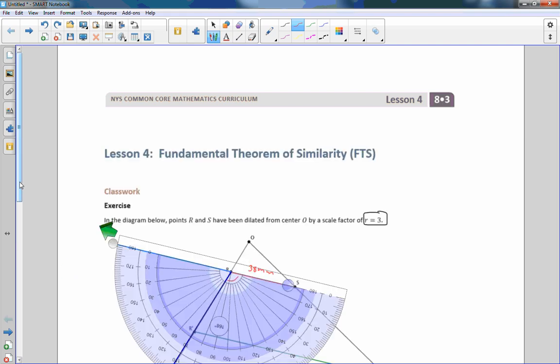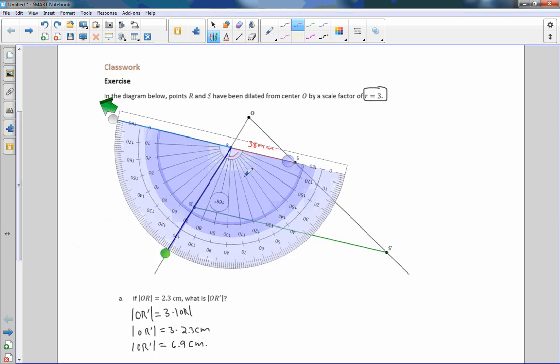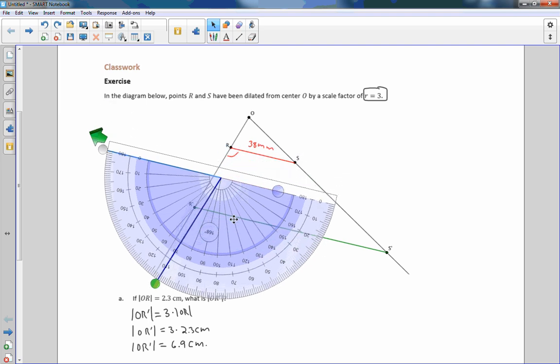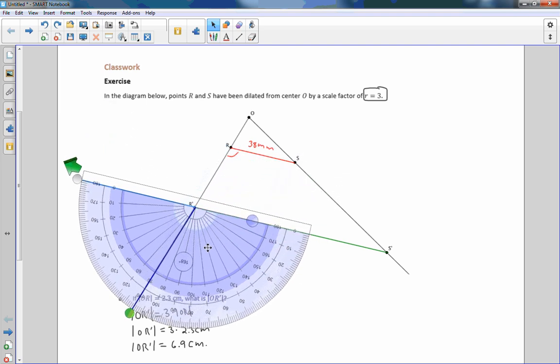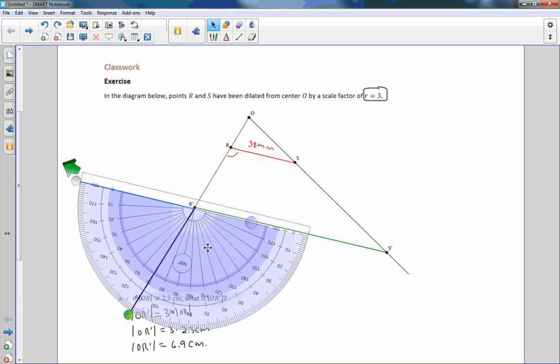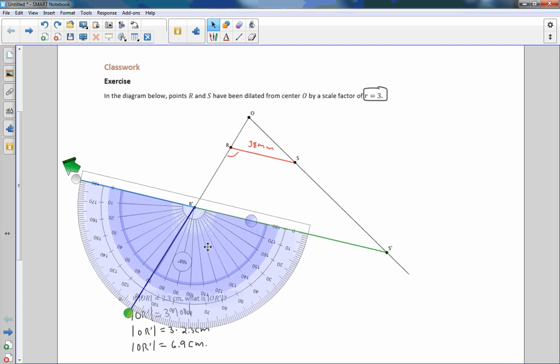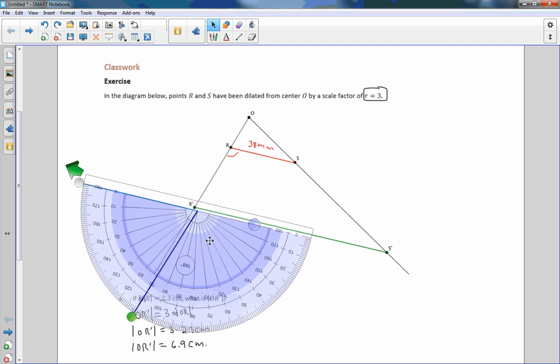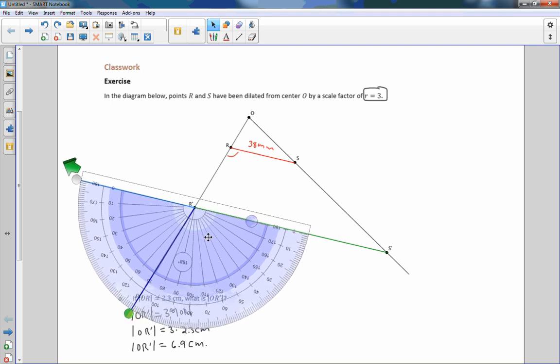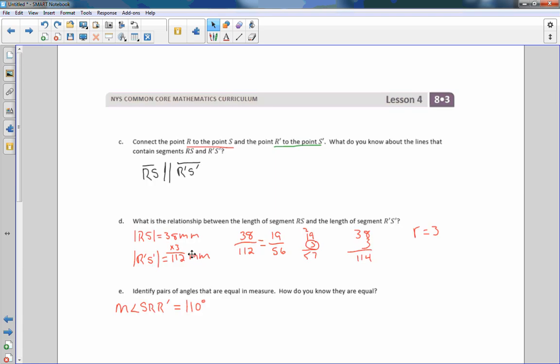Okay, now if I go back, and I move my protractor to here, and put it right on R prime, and make sure this line here is right on. Right there, then you see that it is also 70 degrees, or not 70, the 110 degrees, the obtuse angle.